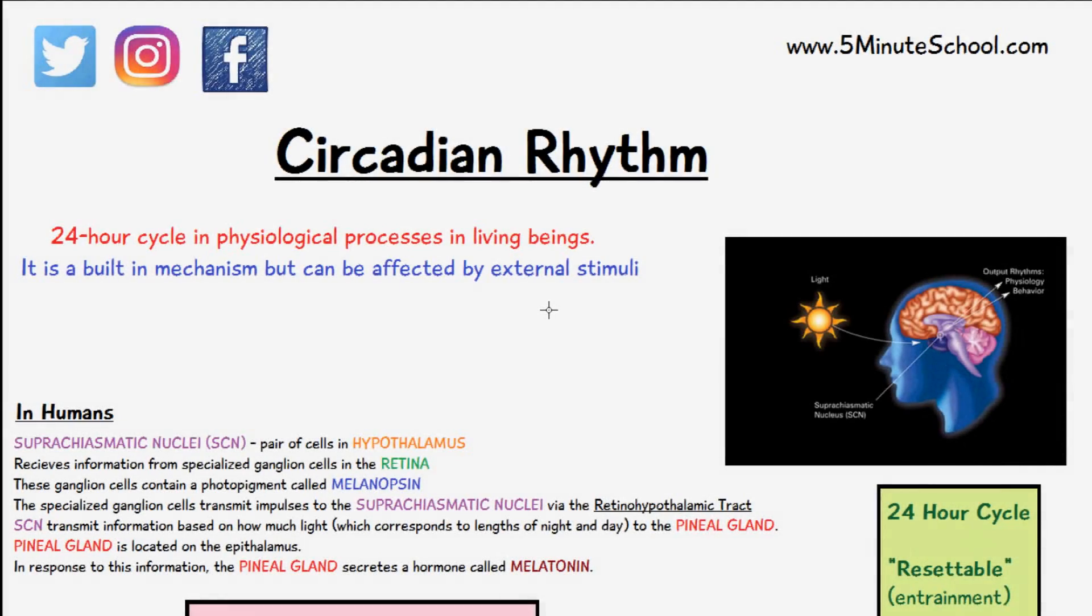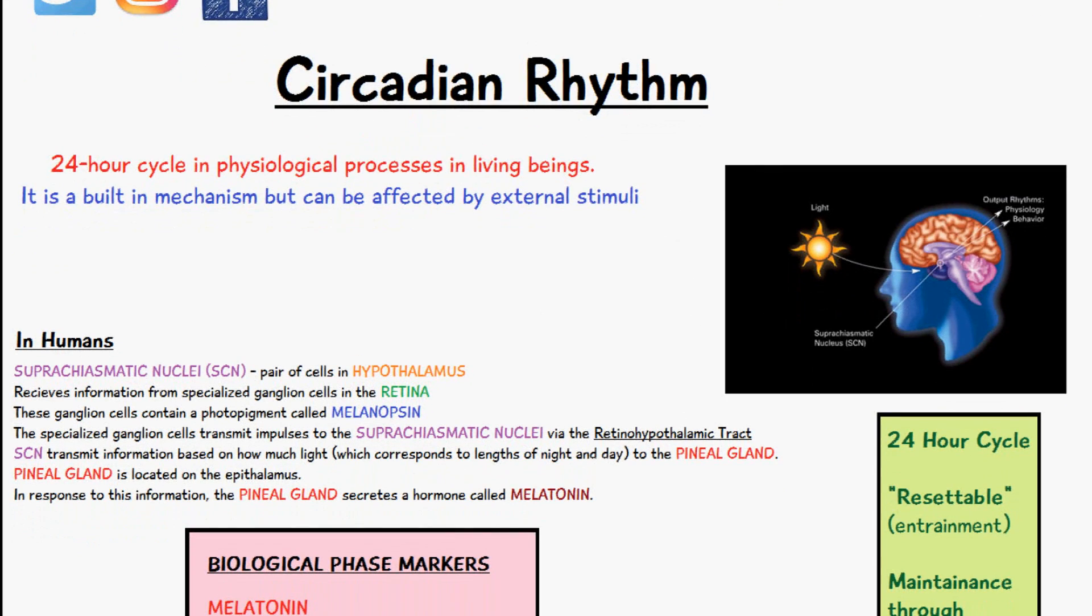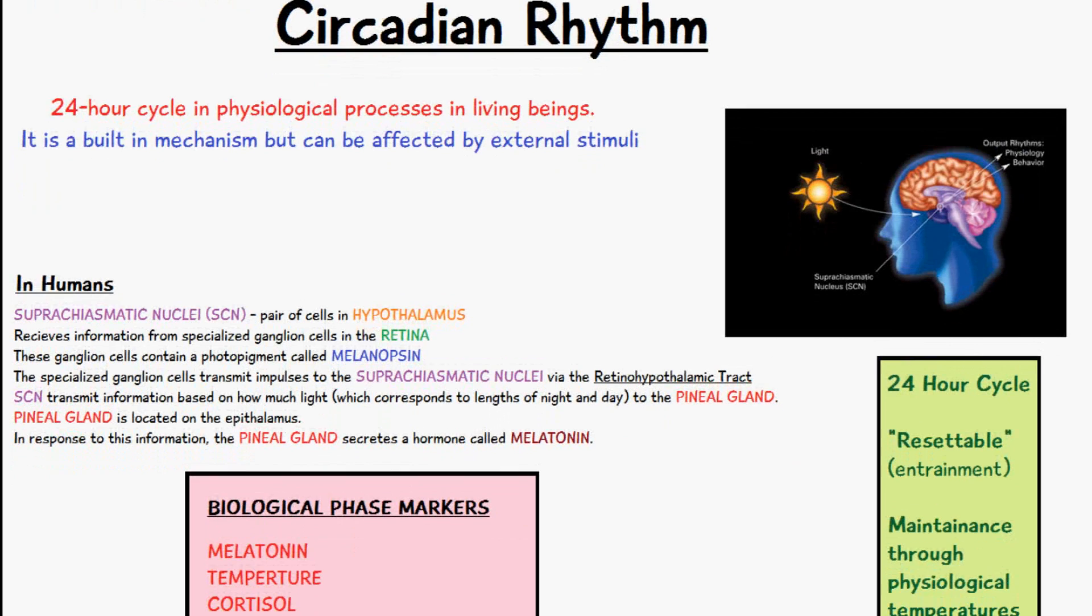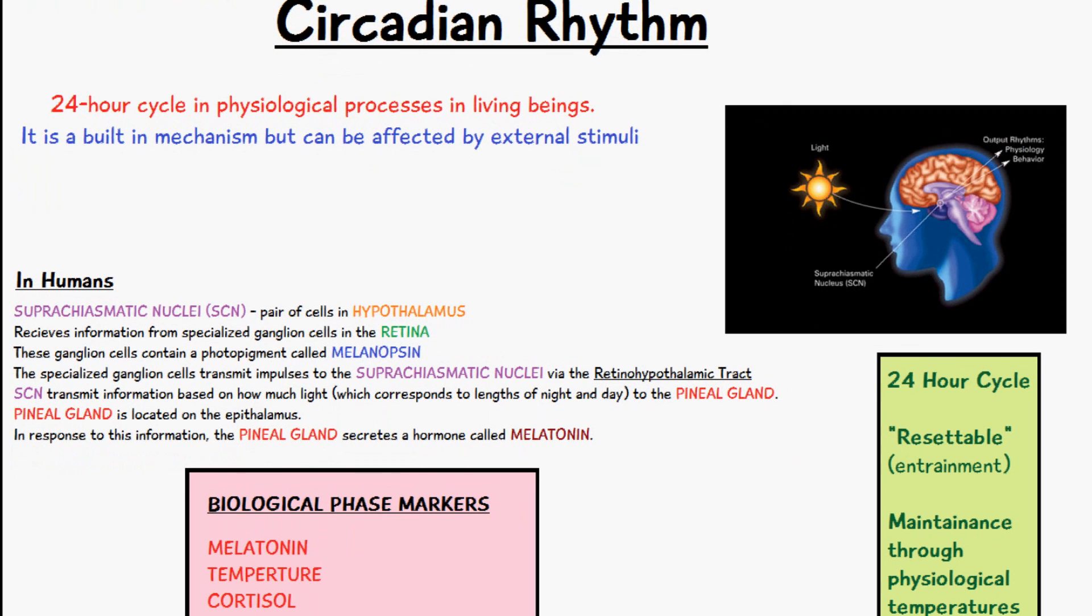In today's video, we're going to be talking about the circadian rhythm. This is a 24-hour cycle in the physiological processes occurring in living beings. It's a built-in mechanism but can be affected by external stimuli. We're just going to be talking about the circadian rhythm in humans. There are different processes occurring in plants and cyanobacteria, for example, but this video will focus on humans.